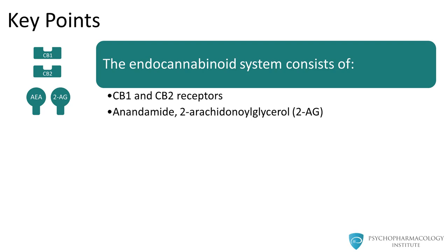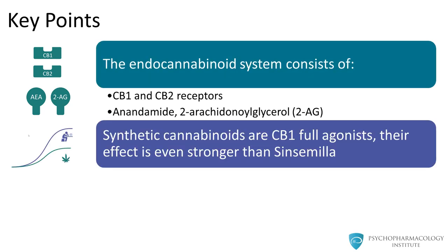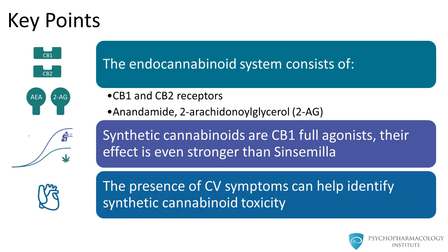The endocannabinoid system consists of receptors — CB1 and CB2 receptors — and endogenous ligands, anandamide and 2-arachidonylglycerol. Synthetic cannabinoids are full agonists at the CB1 receptor and their effect is even stronger than Sinsemilla. The presence of cardiovascular symptoms can help identify synthetic cannabinoid toxicity.